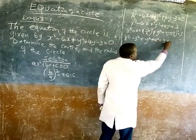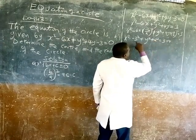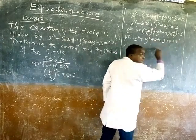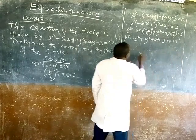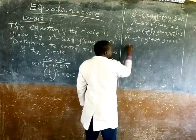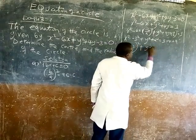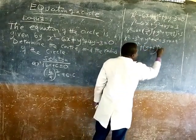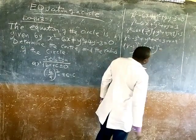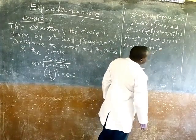Now, this square is 9. This square is 9. We add this one on that side. Now we have x minus 3 square plus y plus 2 square equal to 16.